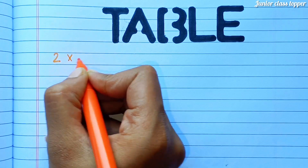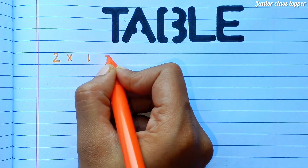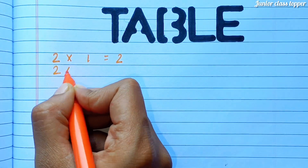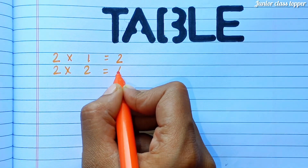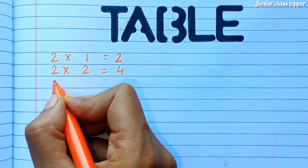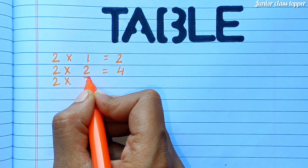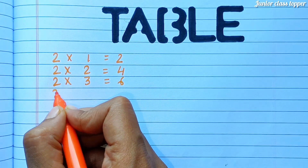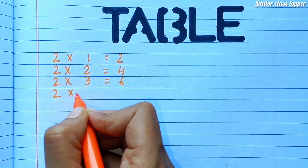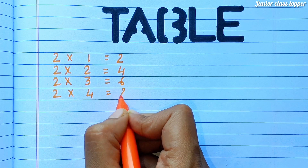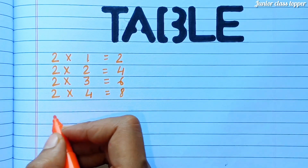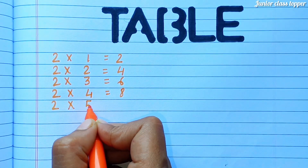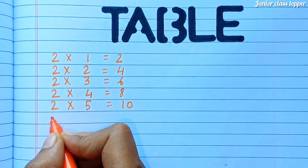2 1s are 2. 2 2s are 4. 2 3s are 6. 2 4s are 8. 2 5s are 10.